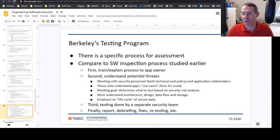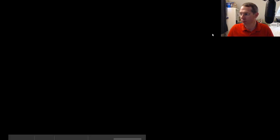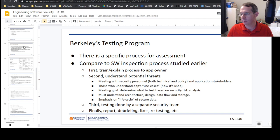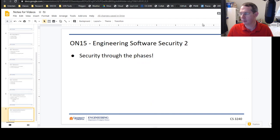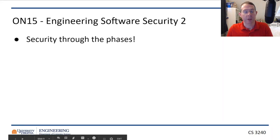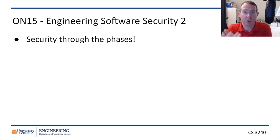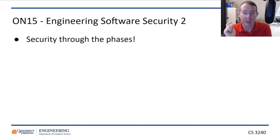Let's see what we're going to do this morning. We are going to go into the second day of engineering software security. Remember yesterday, we talked about the main things we're concerned about when we are trying to manage security in the engineering lifecycle: confidentiality, integrity, and availability.